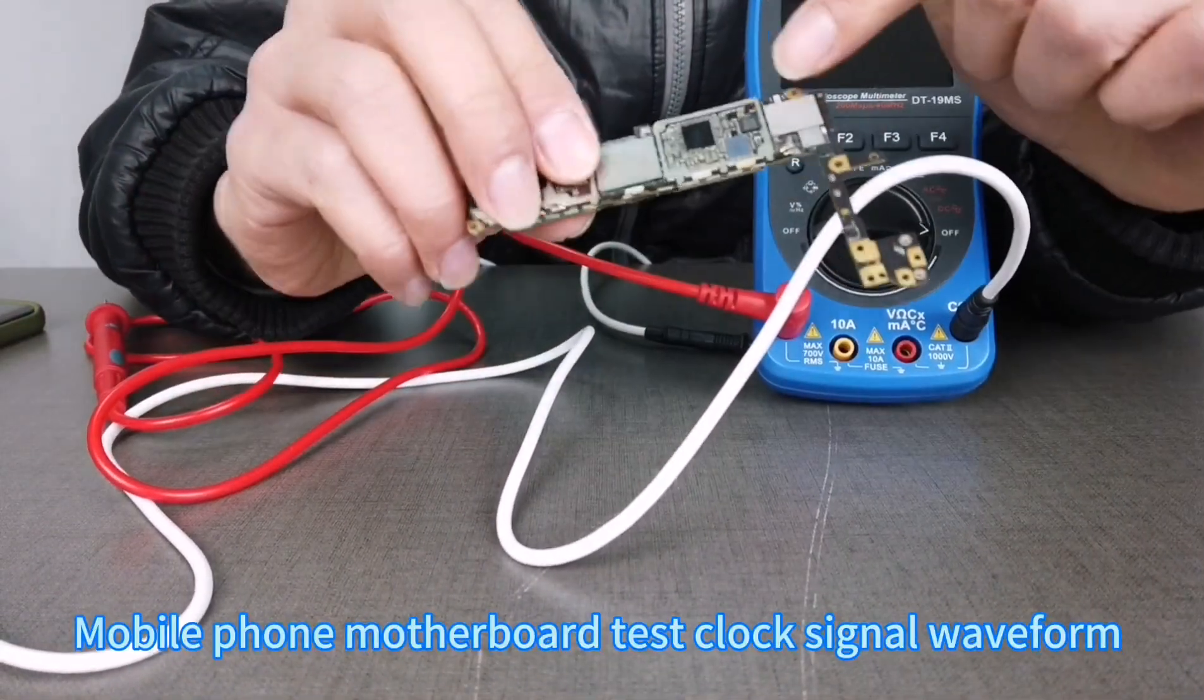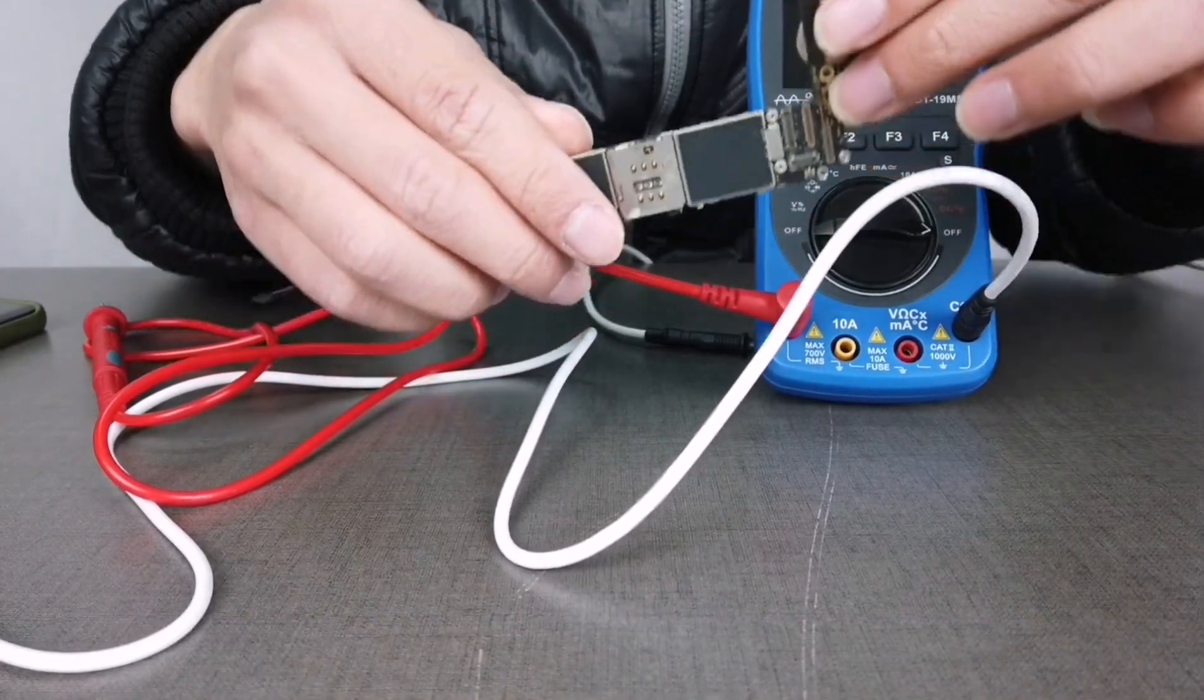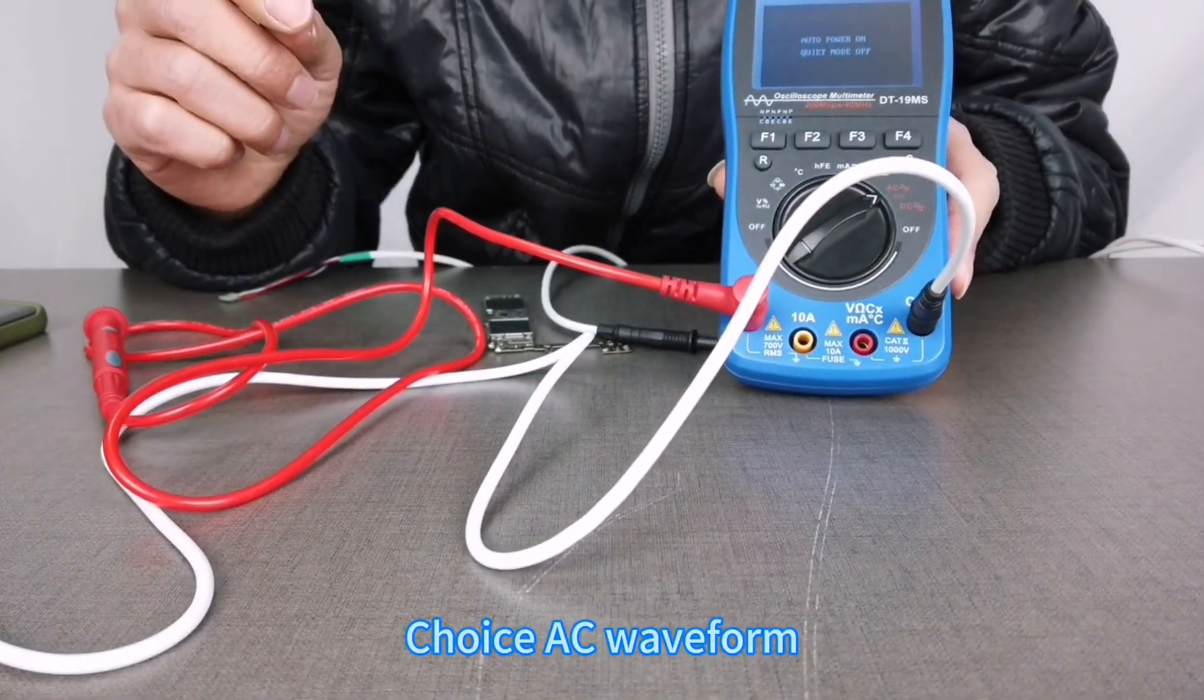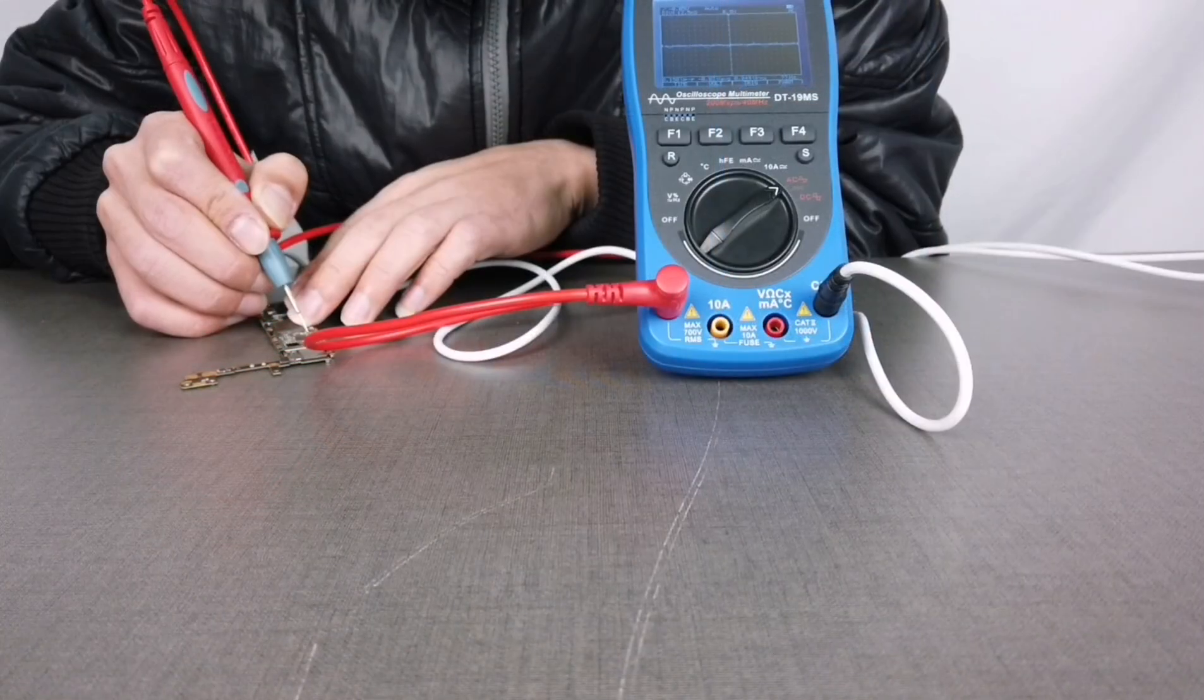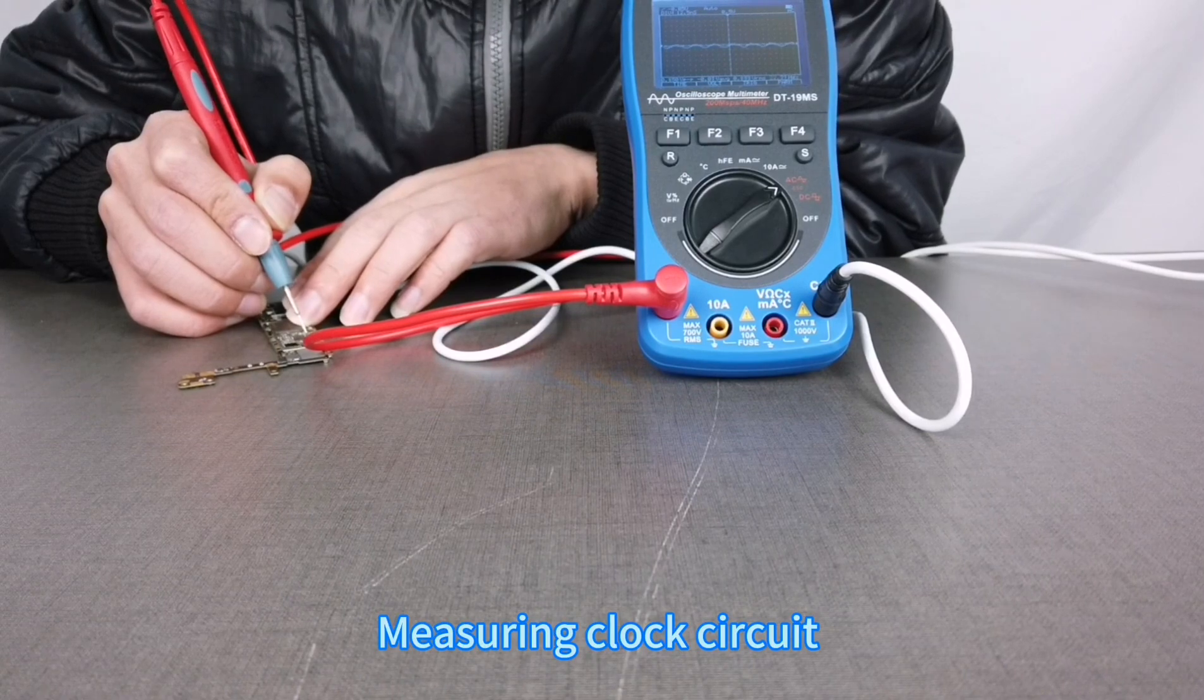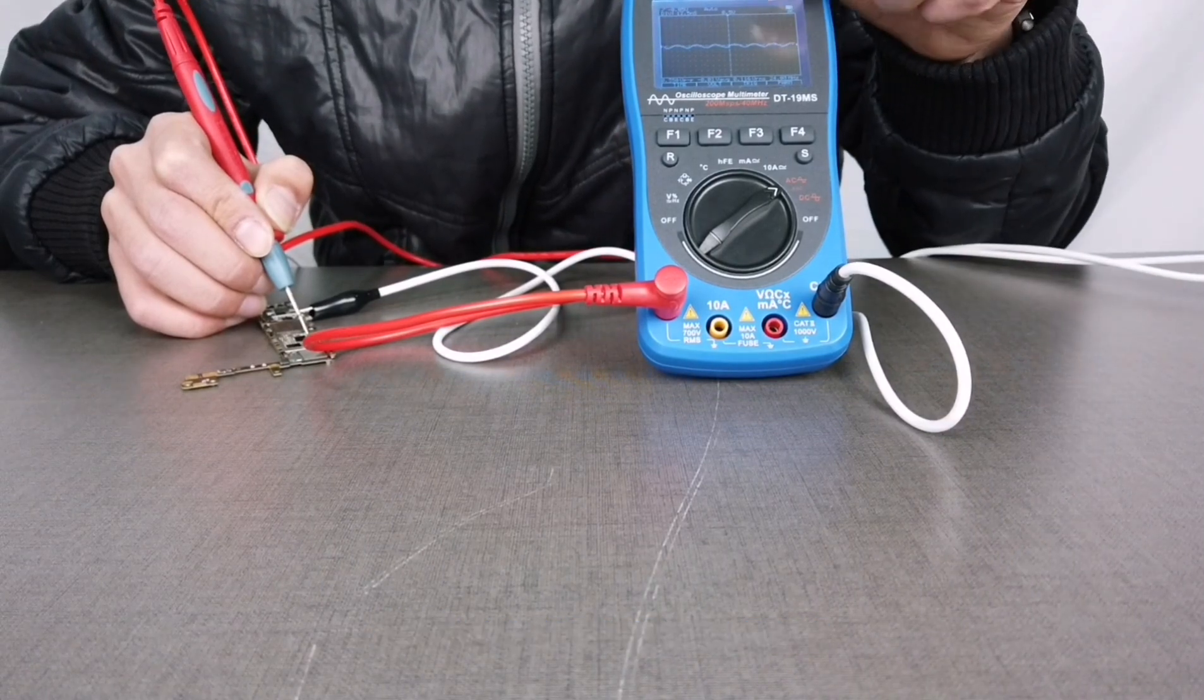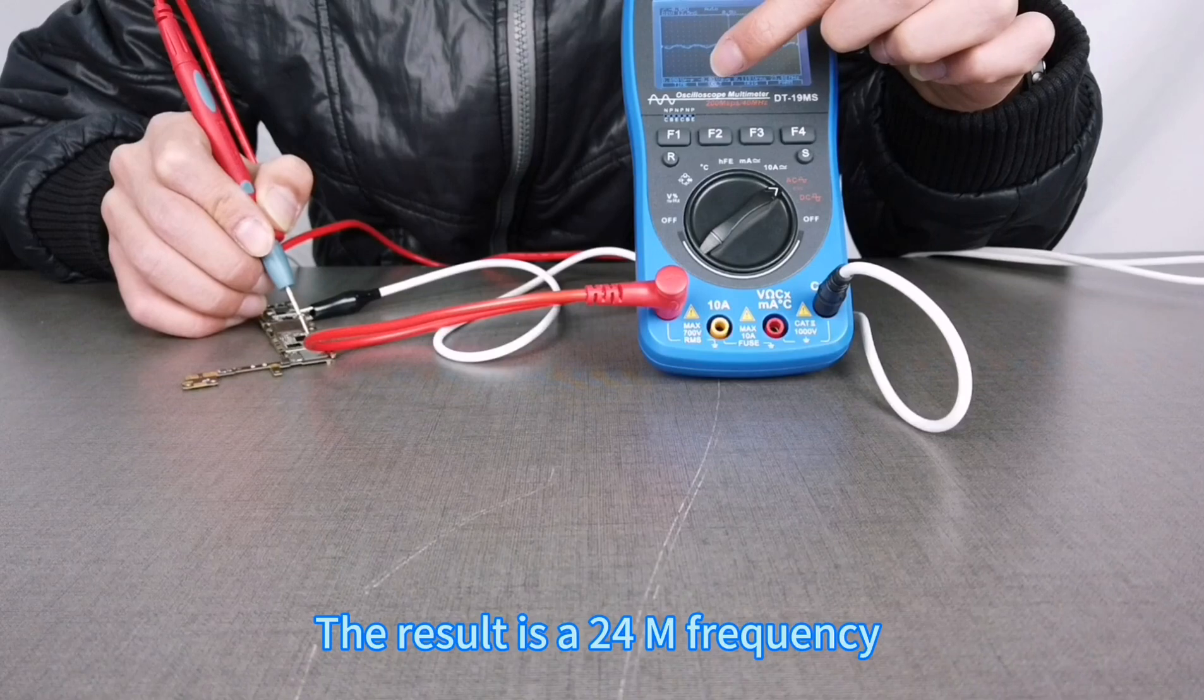Testing a mobile phone motherboard clock signal waveform: Choose AC waveform mode, measure the clock circuit, click on automatic gear, and the result shows a 24 MHz frequency.